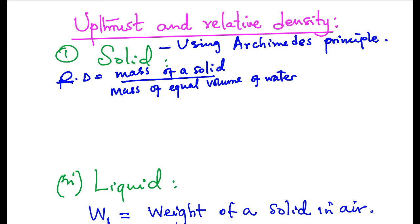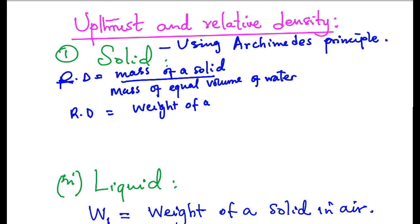Mass is directly proportional to weight, and therefore relative density can be expressed in terms of weight as follows. Relative density in terms of weight is weight of the solid over weight of equal volume of water.